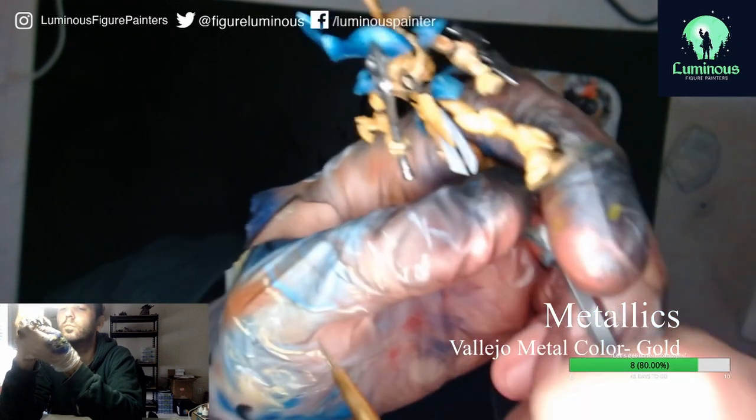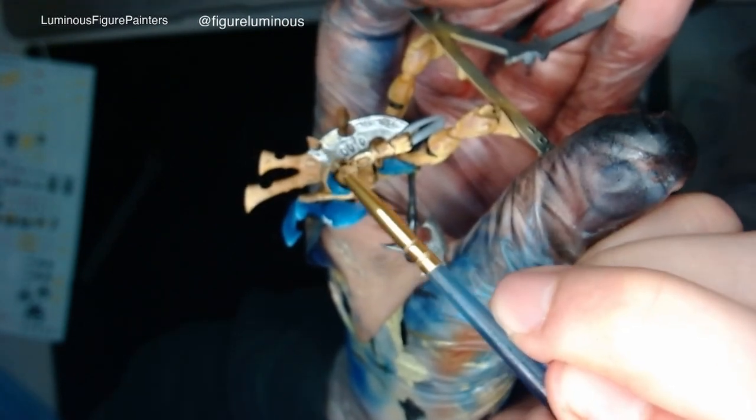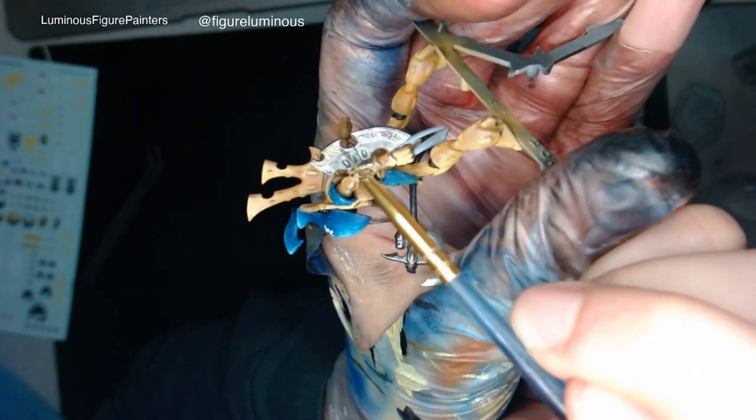Next, apply Vallejo Metal Color Gold to the Eldar decorations and runes. These are located on the axe, chest, and outer rim of the shield.